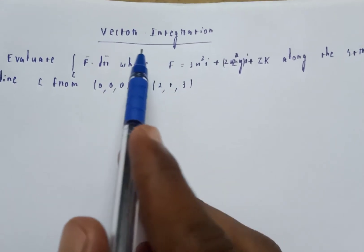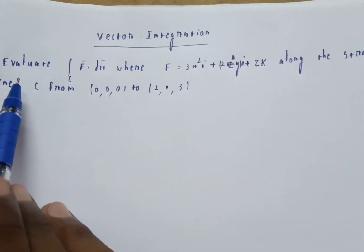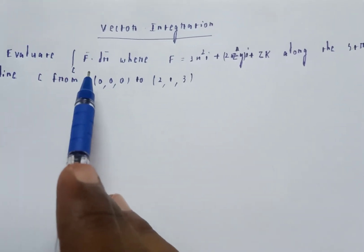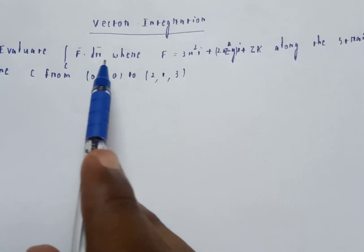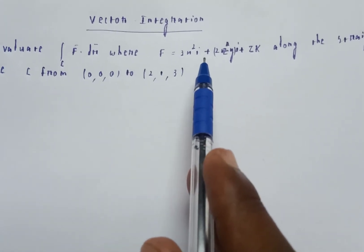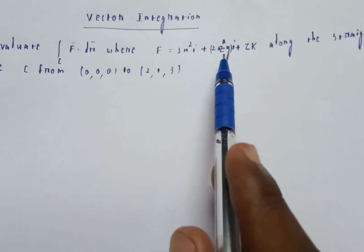Welcome to my channel. Vector integration. Evaluate the integral C of F bar dot dr bar where F is equal to 3x square i plus 2xz minus